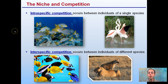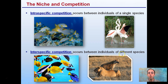There are two different types of competition. Intraspecific competition occurs between individuals of the same species. Interspecific competition occurs between individuals of different species. We see the lion and the hyena — these are different species, so that is interspecific competition. Two flamingos competing would be intraspecific competition.